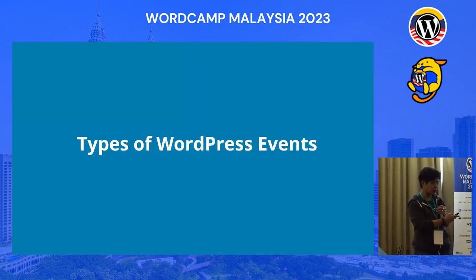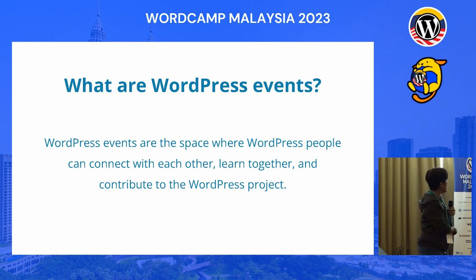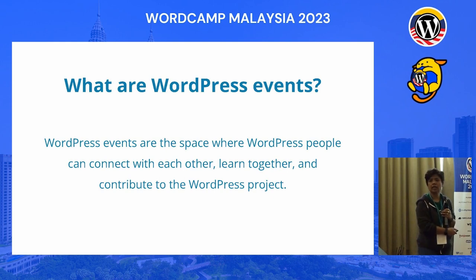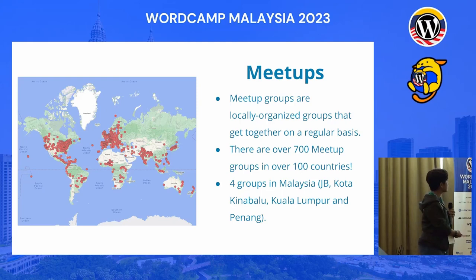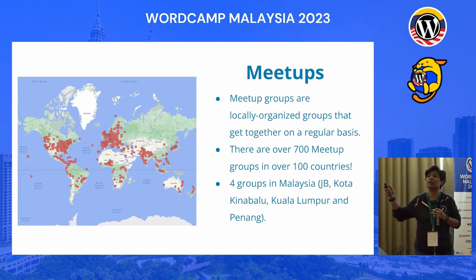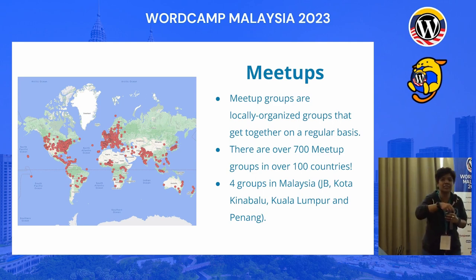Types of WordPress events — I'll be quick with this. WordPress events are spaces where we meet, connect, and learn, but the most important thing is to contribute to the WordPress project. What you do is for the sake of the community and the WordPress project — the software itself and everything surrounding it. First, we have meetups. If anybody hasn't been to any meetups at all, then you have to start a meetup in your area, your city, your town.